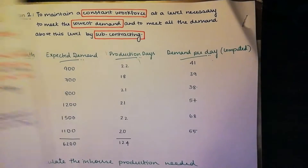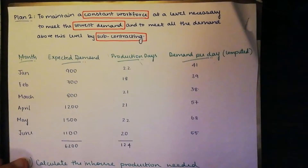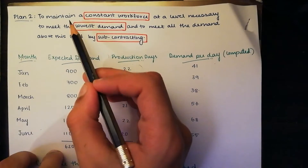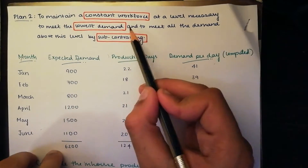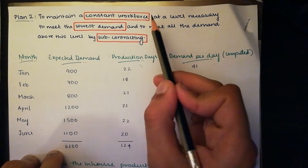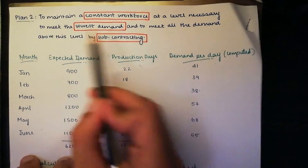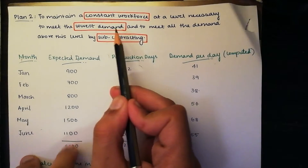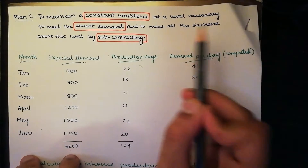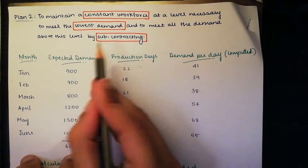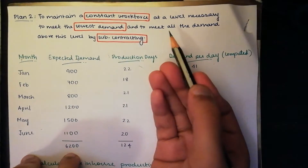It's a similar strategy that we are using in Plan 2 as well. We need to maintain a constant workforce at a level necessary to meet the lowest demand, and to meet all the demand above this level by subcontracting.